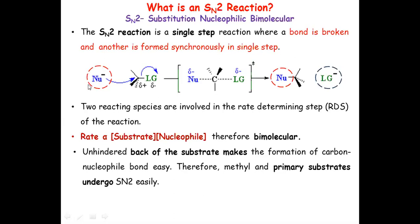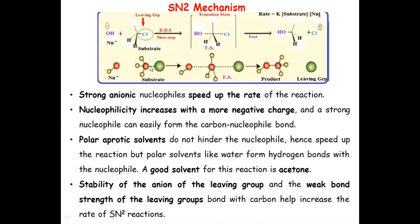It is observed that in this reaction the nucleophile approaches exactly from the backside of the leaving group to give the product. So the orientation of the nucleophile will be exactly opposite to the leaving group. Generally, primary substrates undergo this kind of reaction. More details can be seen in this particular reaction.